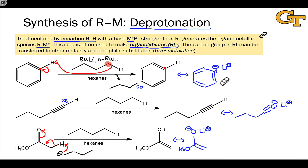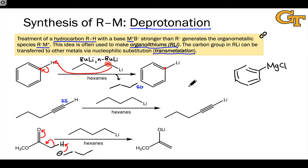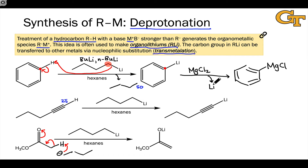Once we've generated an organolithium species — an extremely strong carbon nucleophile and carbon base — it's relatively straightforward to transfer the organic group to another metal. This is called transmetallation, and it's a common strategy for synthesizing organometallic compounds. For example, to synthesize phenyl Grignard reagent, replacing the carbon-lithium bond with a carbon-magnesium bond, we note that carbon in the organolithium is a stronger nucleophile than in the Grignard reagent, since lithium is more electropositive than magnesium. Treating with MgCl₂ via nucleophilic substitution generates the Grignard reagent and LiCl.